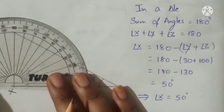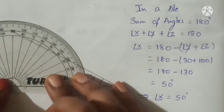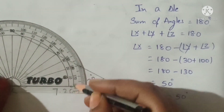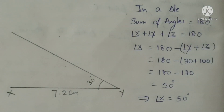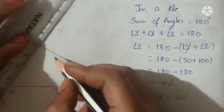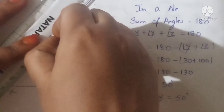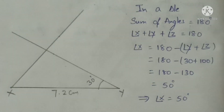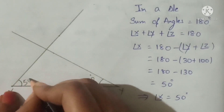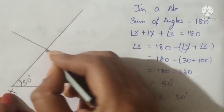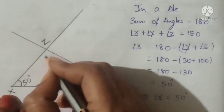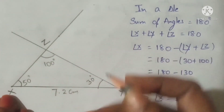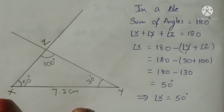Place the protractor at X and measure 50 degrees. From 0: 10, 20, 30, 40, 50. Join the two rays — they intersect at a point which we name point Z. The angle at Z measures 100 degrees. Thus the required triangle XYZ is formed.